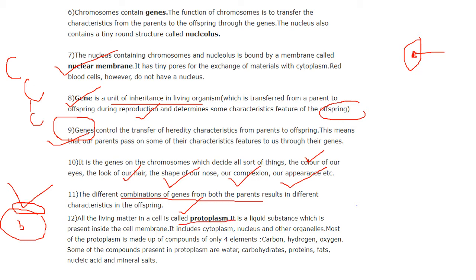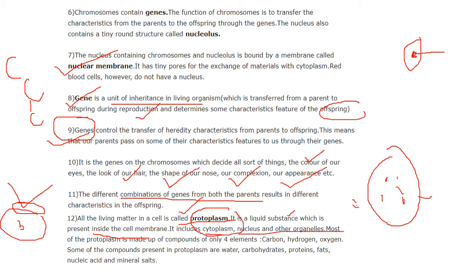The last topic is protoplasm. All living matter in a cell is called protoplasm. Whatever the organelles that are present inside the cell, they are called protoplasm. It is a liquid substance present inside the cell membrane, and it includes the cytoplasm, the nucleus, and the other organelles. It is made up of four elements — these are some of the compounds which make up the structure of the protoplasm.